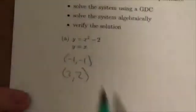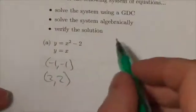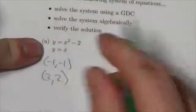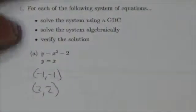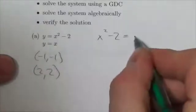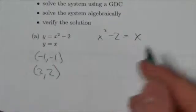Okay, so I've used the calculator. Those are the answers that I got here. Now I'm going to do this algebraically, basically by setting up a substitution. So both equations here are equal to y, which means I should be able to set them equivalent to each other. So x squared minus two should equal x because they're both equal to y.